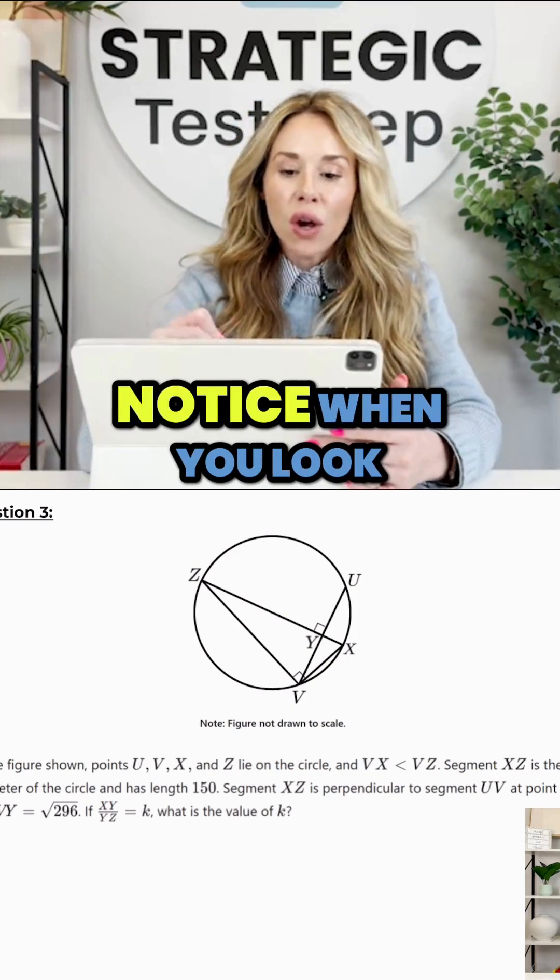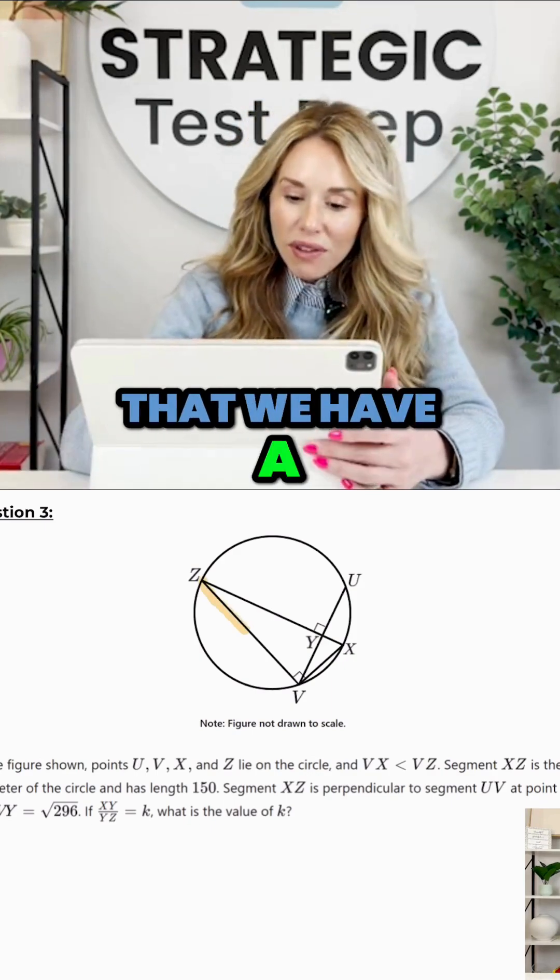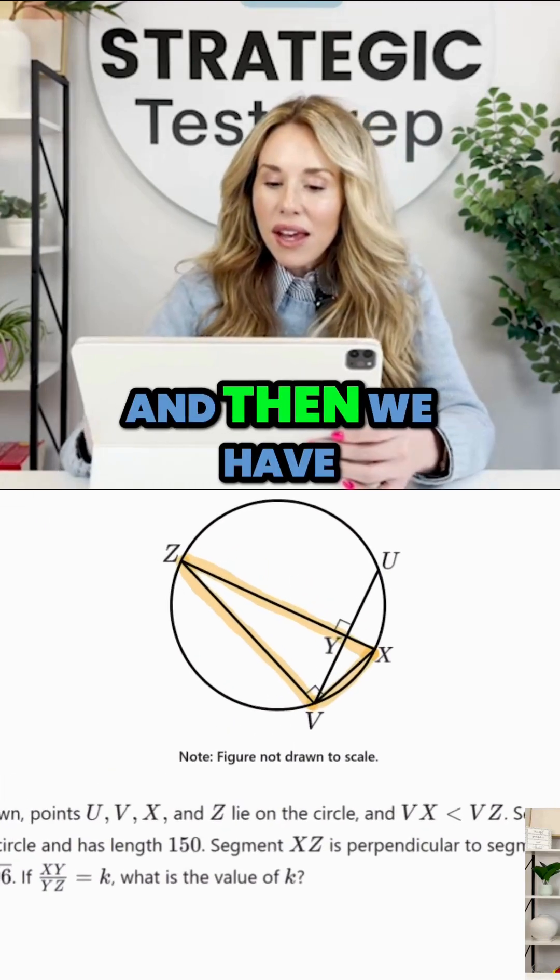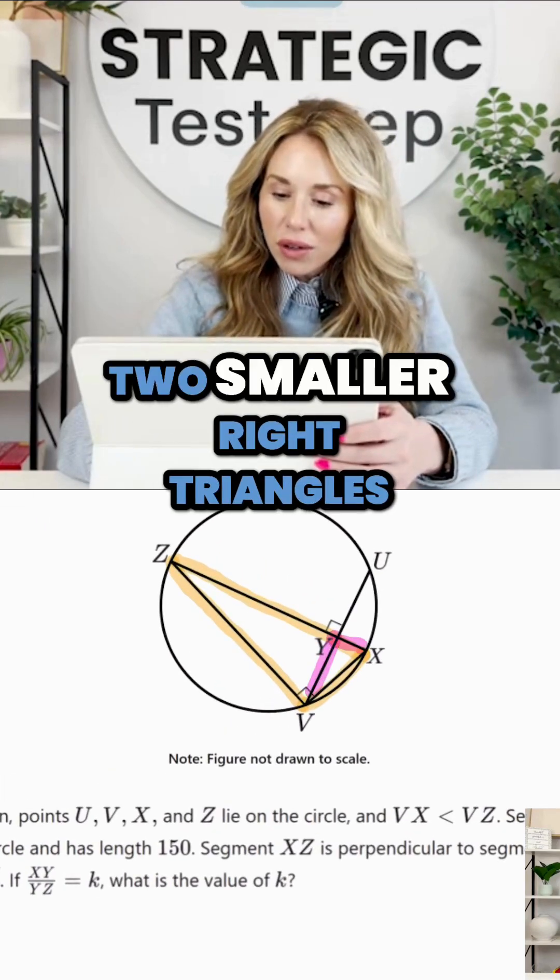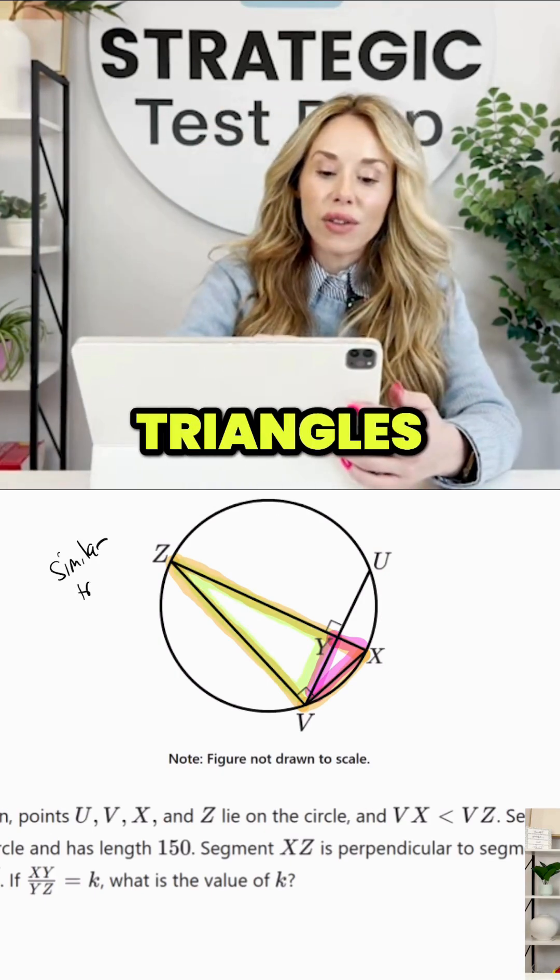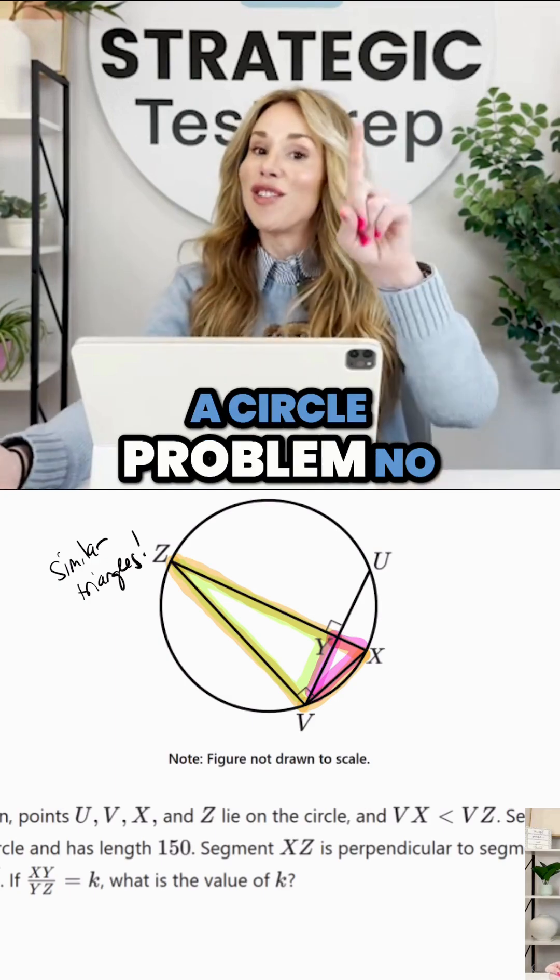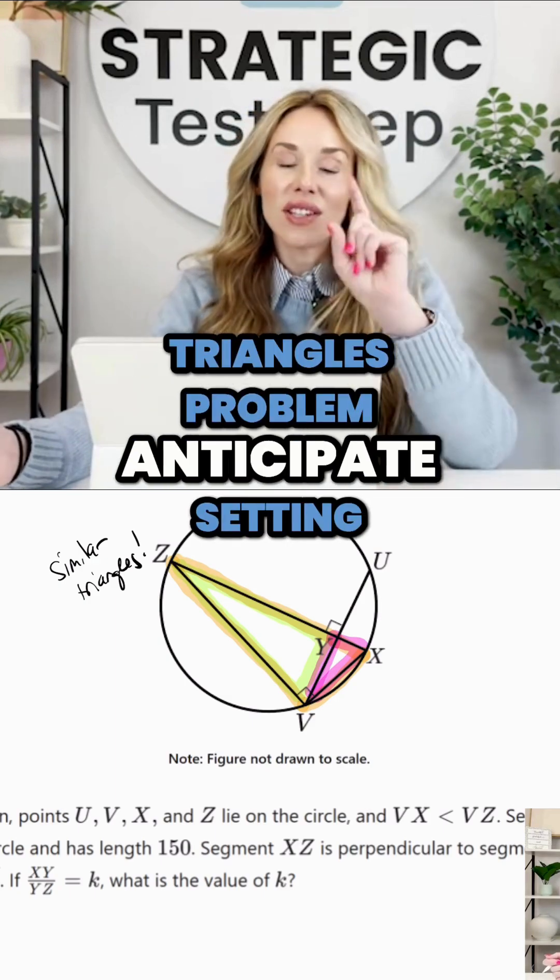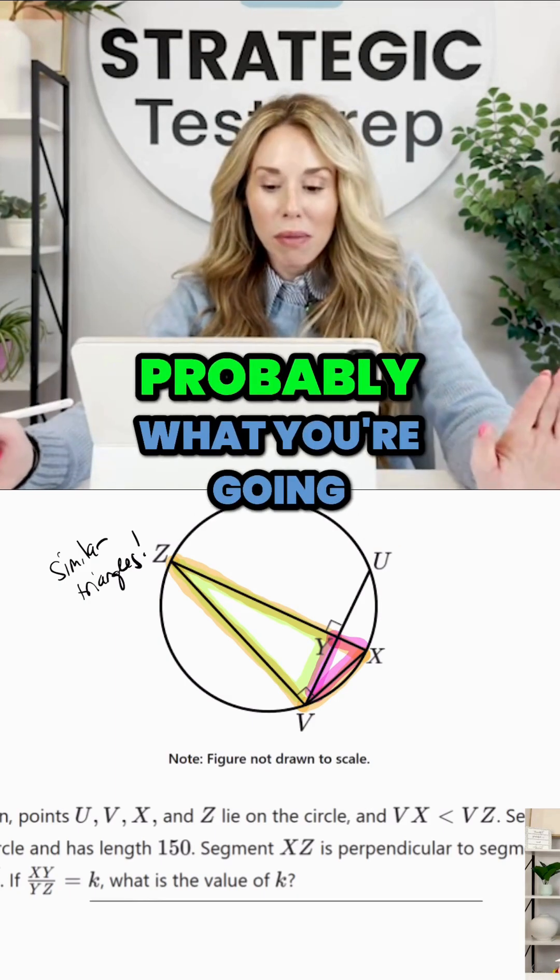But what you should notice when you look at this picture is that we have a big right triangle and then we have two smaller right triangles inside of the big right triangle. This is testing you on similar triangles. So is it really a circle problem? No. If it's a similar triangles problem, anticipate setting up a proportion. That's probably what you're going to have to do.